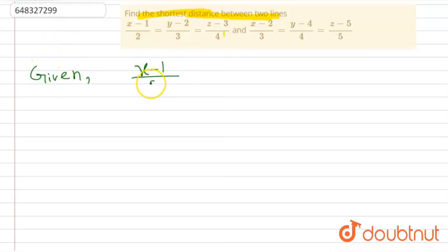x minus one by two equals y minus two by three equals z minus three by four, and x minus two by three, y minus four by four, z minus five by five.